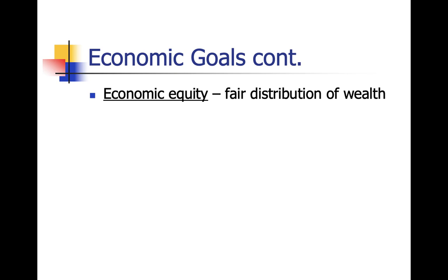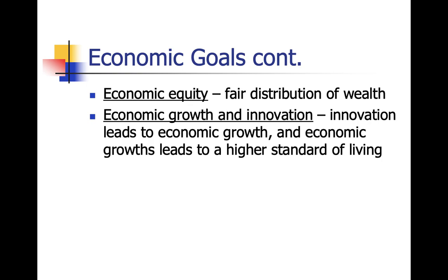Continuing with economic goals: equity means some countries prioritize fair distribution of wealth — like Sweden and Norway with very high tax rates. A concept like universal basic income would be a fair distribution of wealth. Innovation and growth are more characteristic of capitalist society. 'Necessity is the mother of invention' is key — you make something because you'll make money, and innovation leads to more profit, driving the latest, cheapest technology.